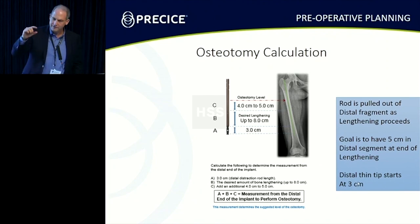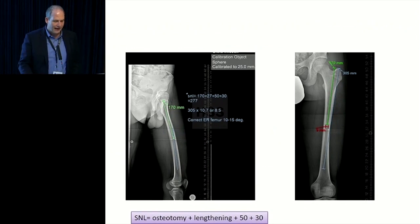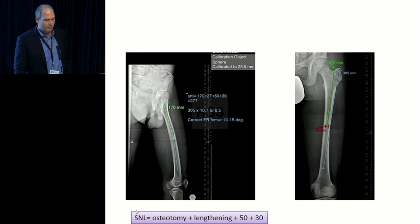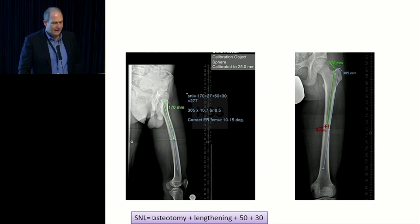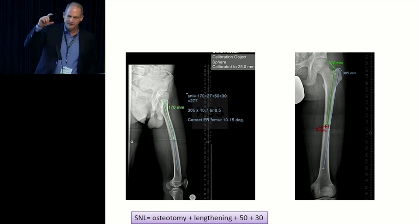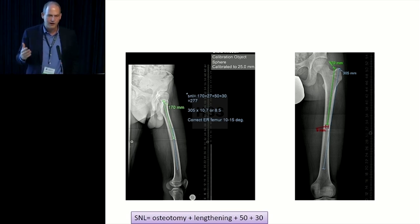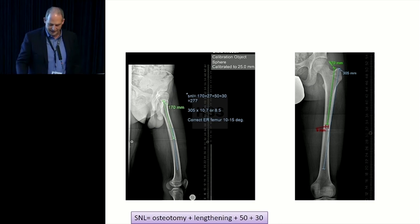Remember that the thin distal tip is three centimeters. As we plan this, the nail is a straight nail. So if I'm doing an antegrade nailing, I pick the apex of the natural bow or the apex of the deformity because I need to put a straight nail in. I measure my osteotomy, which is 170, and I use a formula called SNL — shortest nail length — equals the length of the osteotomy plus the amount I want to lengthen plus 50 plus 30. So the shortest nail length is the osteotomy length plus the amount I lengthen plus 80 millimeters.